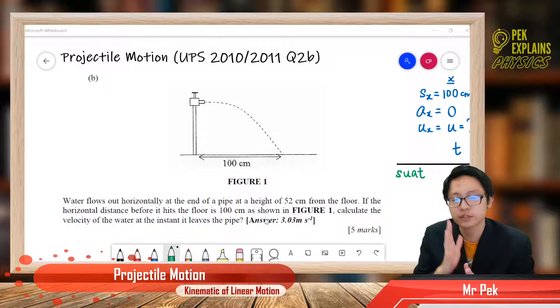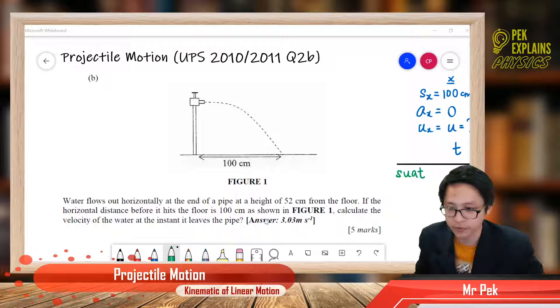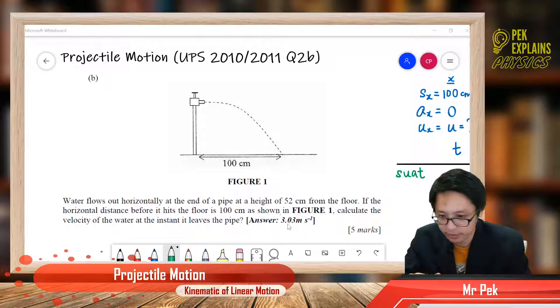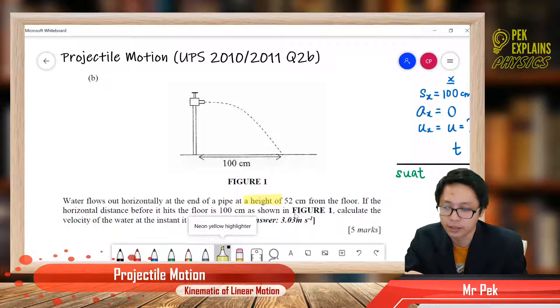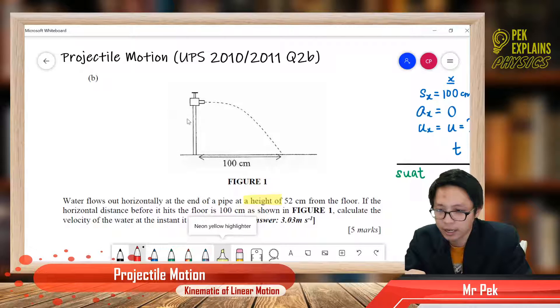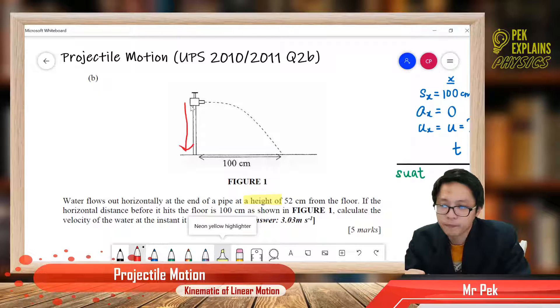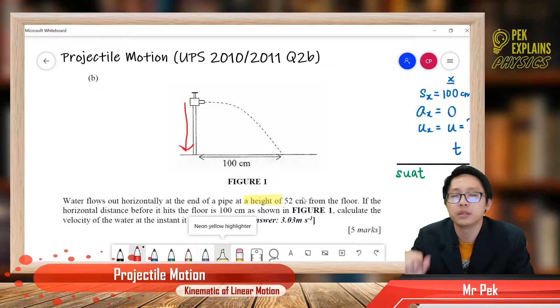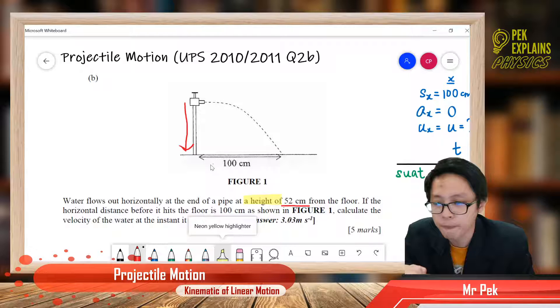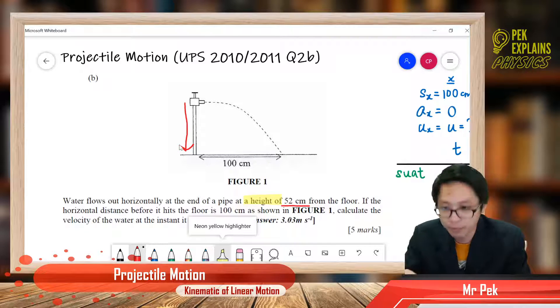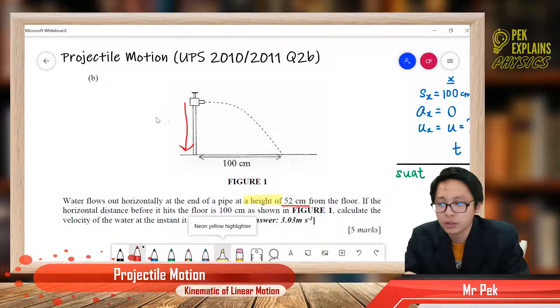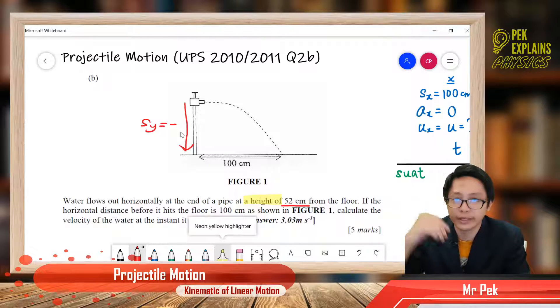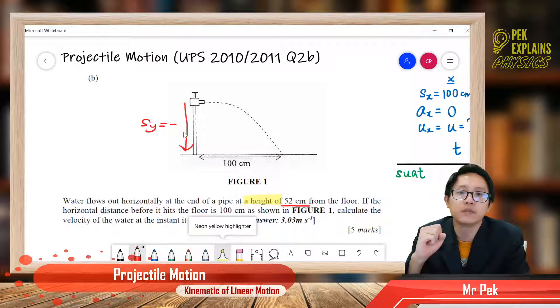First of all, let us find out what kind of information is already given. He gives a height. The height is 52 cm. So this 52 cm gives us the displacement in y component. Since the water is flowing down, we can say the Sy is equal to negative, because the water is flowing down, so it has a negative y displacement.